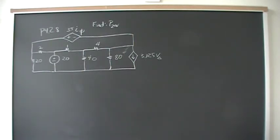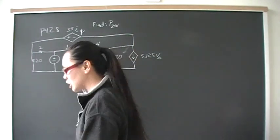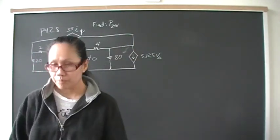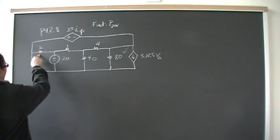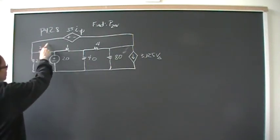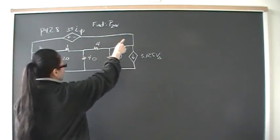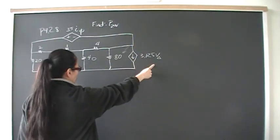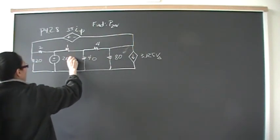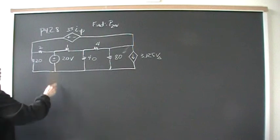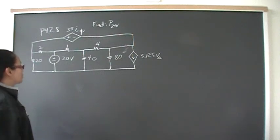Hey you guys, so this is problem 28 from chapter 4, from the section on special cases. We have 2 ohms connected together with a 20 ohm resistor, and up here we have a current controlled voltage source, connected over here to a voltage controlled current source. We also have 80 ohms, 4, 40, 1 ohm resistors, and a 20 volt independent voltage source. We want to find what is the power generated or dissipated by that 20 volt voltage source.